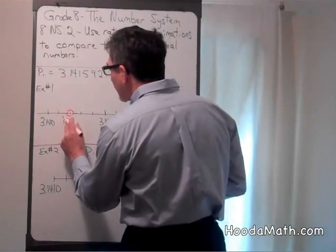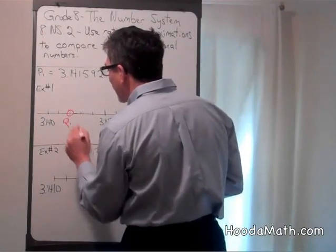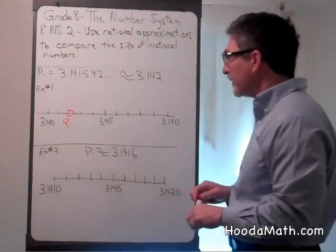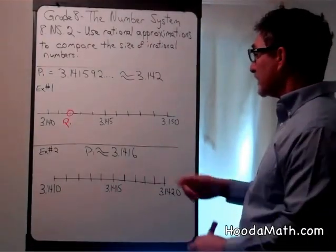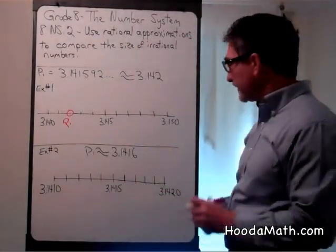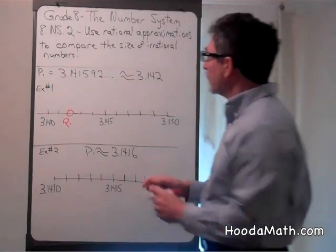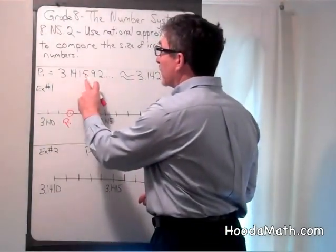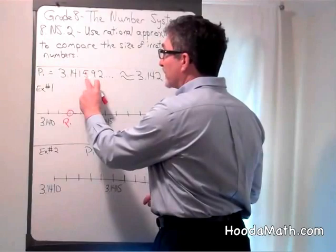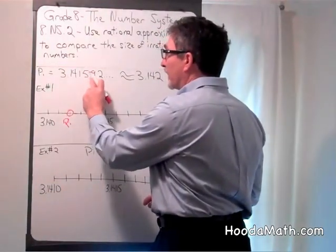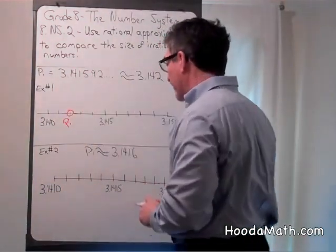If we wanted to get a closer approximation of pi, we will round it to the nearest ten-thousandths place. So we go to the fourth place. Five is rounded up to six because the number to the right is larger than five.